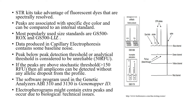The software program for analysis in CE instruments AB 310 and 3130 is GeneMapper ID. Electrophoreograms might contain peaks other than the target alleles, and these peaks can be due to technical or biological issues. The analyst identifies these peaks and edits them out of the genotype to prevent incorrect analysis of data.